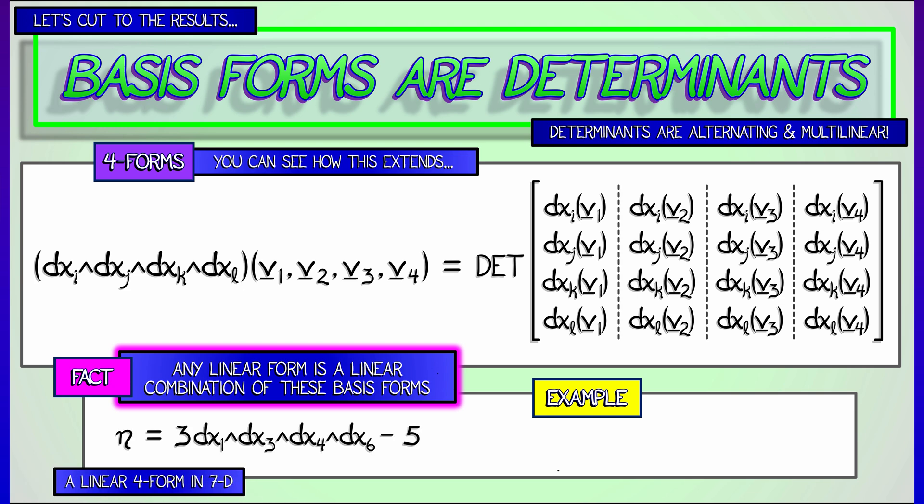So, for example, if I want to look at a typical linear four form in 7D, let's call that eta, then that might be something that looks like 3dx_1 wedge dx_3 wedge dx_4 wedge dx_6, minus 5dx_2 wedge dx_7 wedge dx_5 wedge dx_1, plus 11dx_4 wedge dx_3 wedge dx_7 wedge dx_6. I'm taking those basis four forms, looking at a linear combination of them. That's how this would work. Okay, that's a simple example of a linear four form.